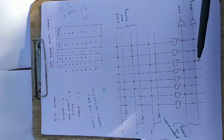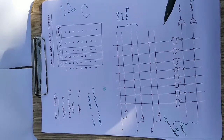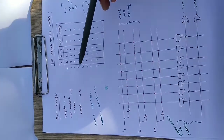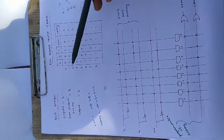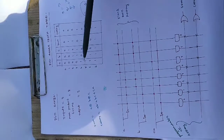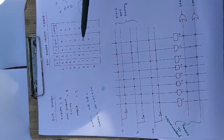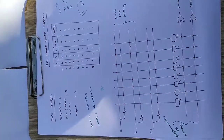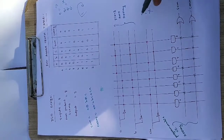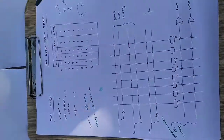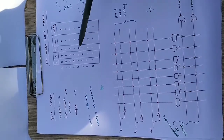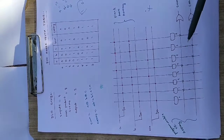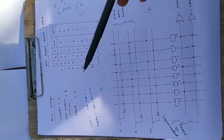The programmable OR array is where we configure the circuit according to our boolean function. For Sum, looking at the truth table, Sum is high at positions 1, 2, 4, and 7 (decimal positions). We mark crosses at those positions on the OR gate — this is the standard notation in VLSI (dots for AND connections, crosses for OR connections). This gives us the OR of those minterms, realizing A XOR B XOR C.